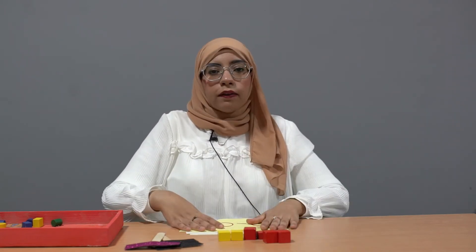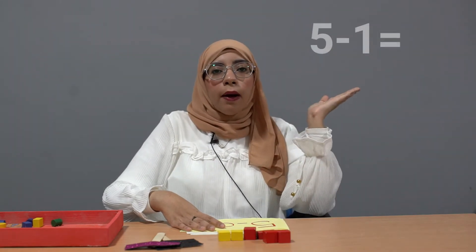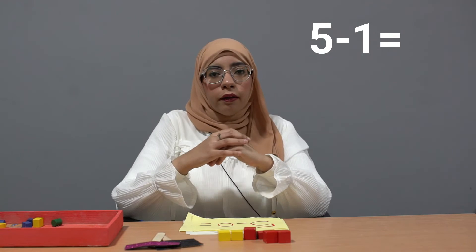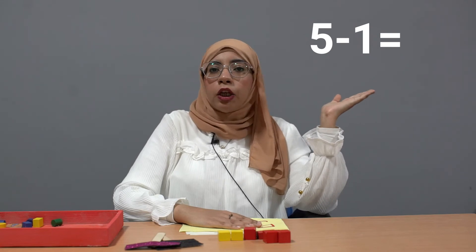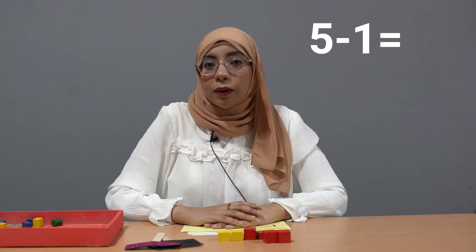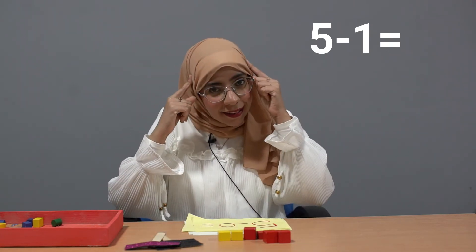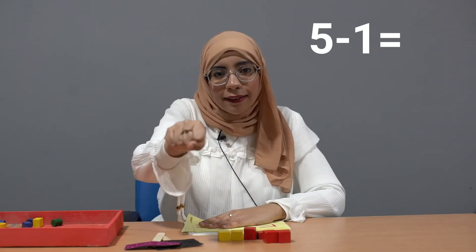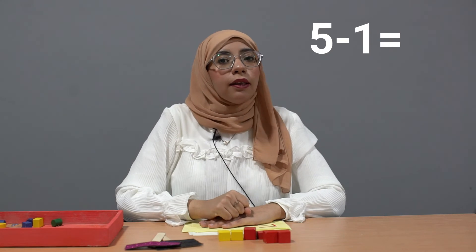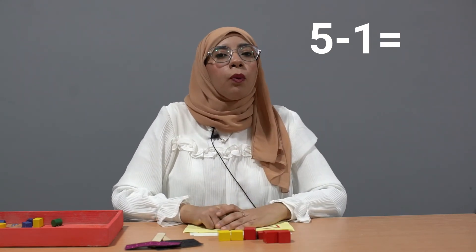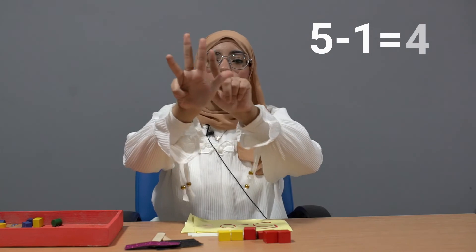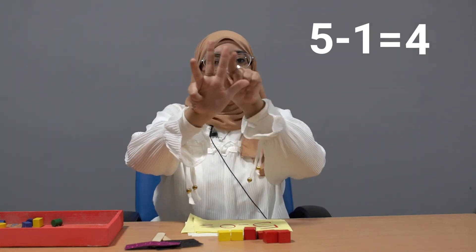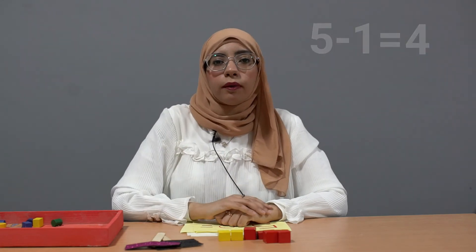One last equation for revision. If I say five minus one equals — which one is the smaller number? One. Put it in your mind, close your hand, then count to the bigger number: after one — two, three, four, five. How many fingers? One, two, three, four. So five minus one equals four.